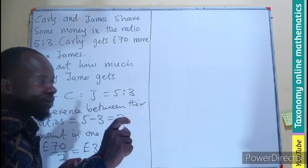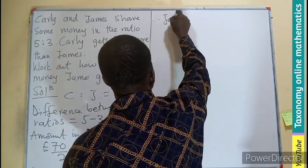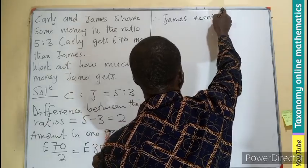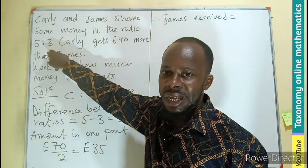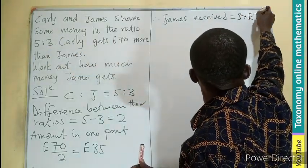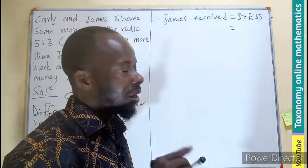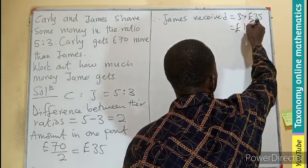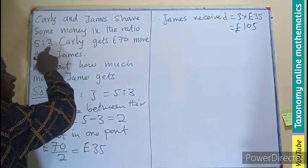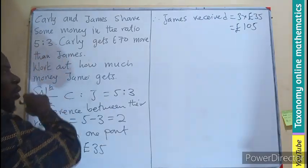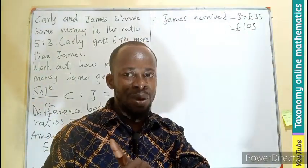5 groups go to Kali, and you can see the two groups' difference — 35 times 2 — gives us 70. So James received 3 groups: that is 3 times 35 pounds. 3 times 30 is 90, and 3 times 5 is 15, so we have 105 pounds. That is what James received.